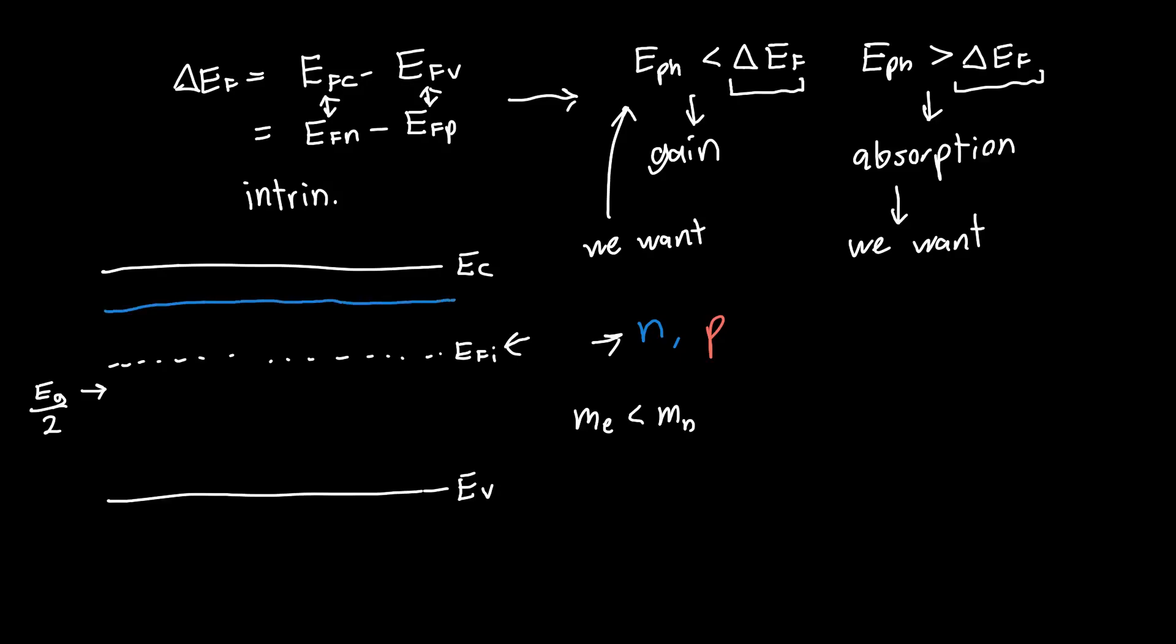So if we assume that it's an intrinsic semiconductor, then our quasi-Fermi level for electrons, or our quasi-Fermi level in the conduction band EFC, we can calculate, if we can use the Boltzmann approximation, we know that this distance, EFC minus EFI, is just equal to kT times the natural log of our electron concentration divided by our intrinsic carrier concentration.